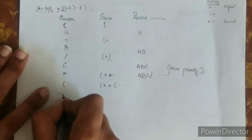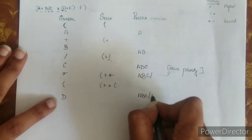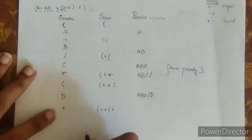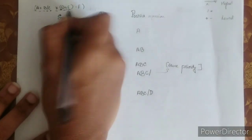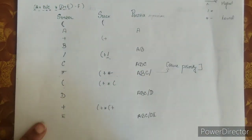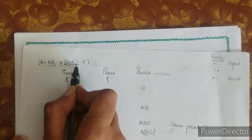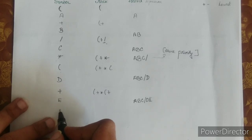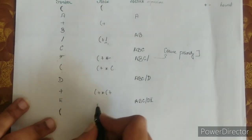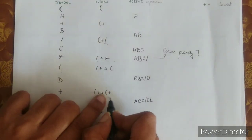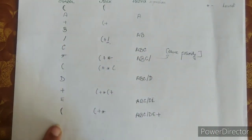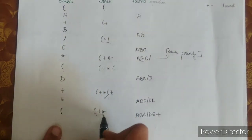Next is d, an operand — add it to the postfix expression: a, b, c, slash, d. Next is the addition operator — push it into the stack. Next is e, an operand — add it: postfix is now a, b, c, slash, d, e. Next is a closing parenthesis. Pop elements from the stack until you reach the left parenthesis and add them to the postfix expression. So the plus operator is popped and added, then the multiplication operator is also popped — postfix becomes a, b, c, slash, d, e, plus, star.